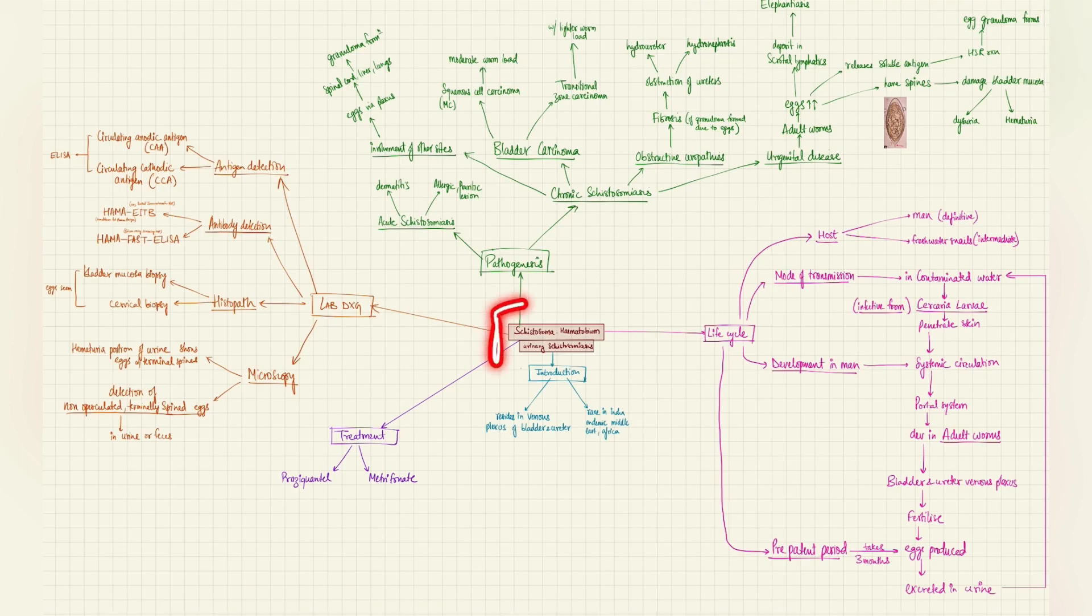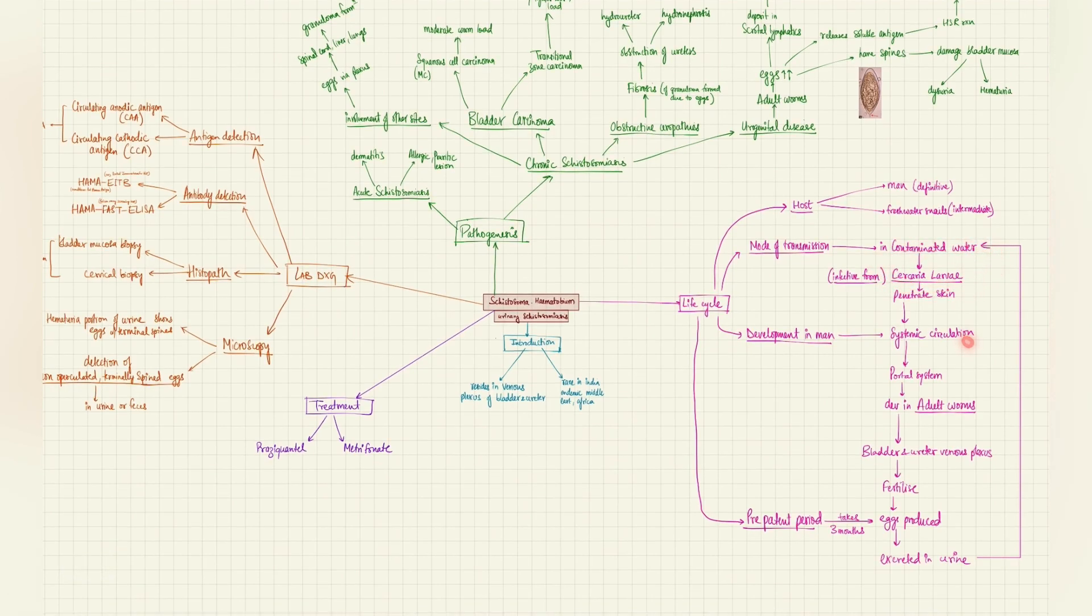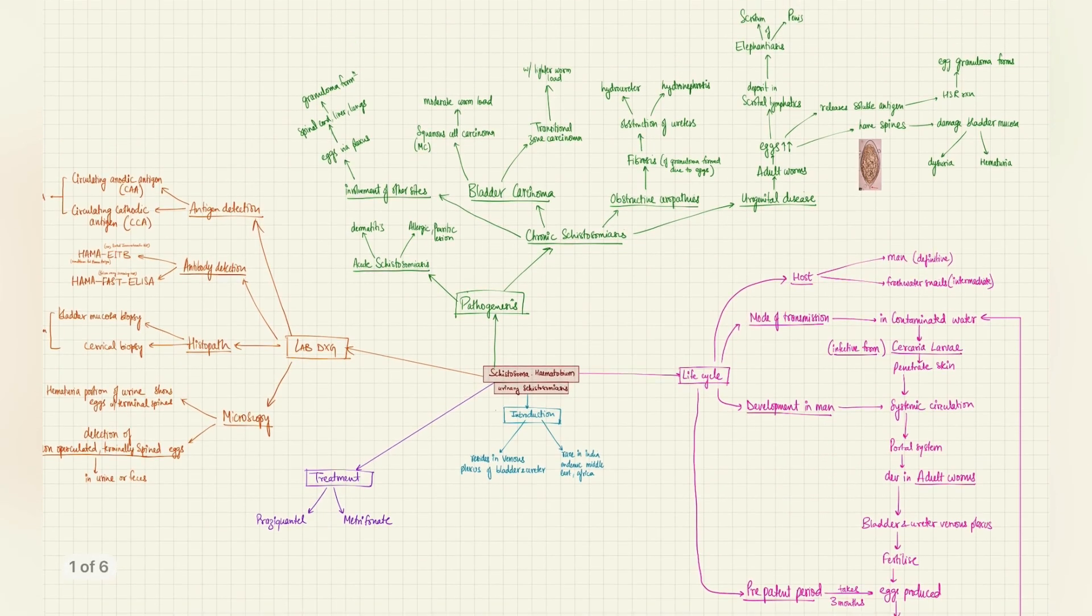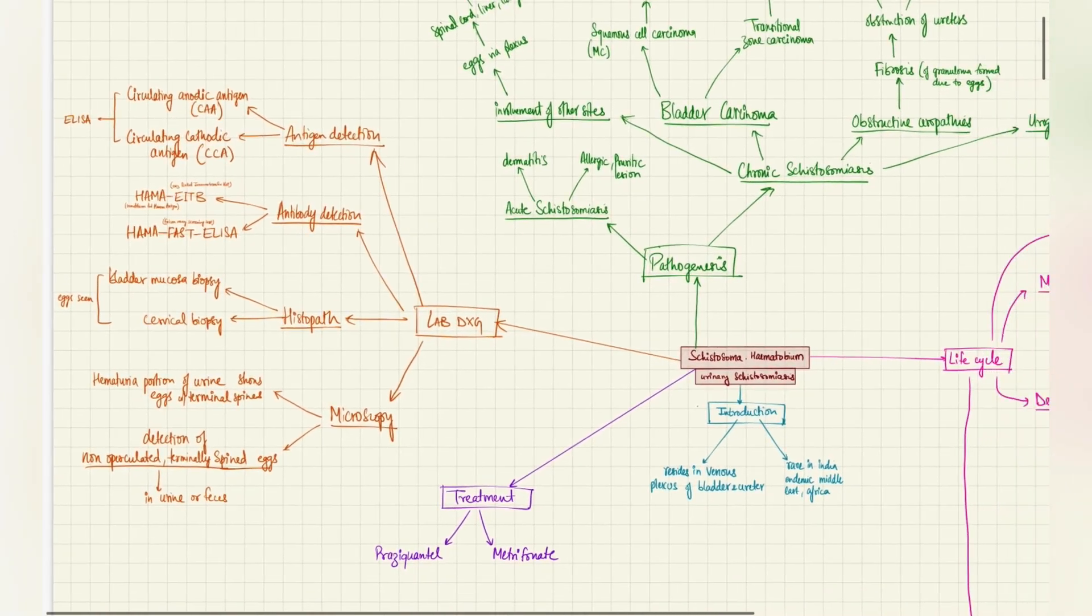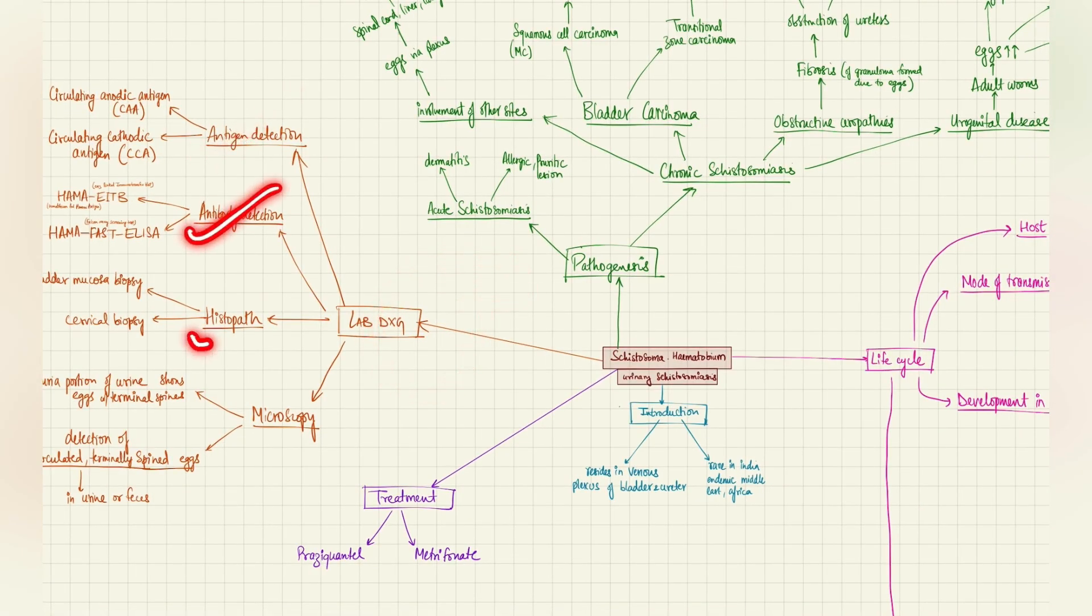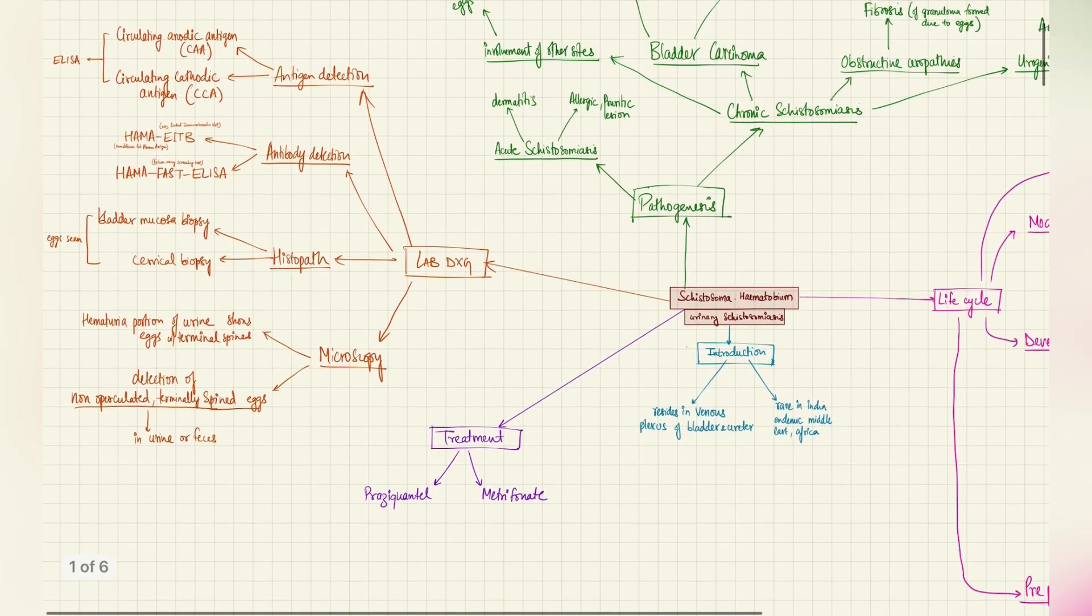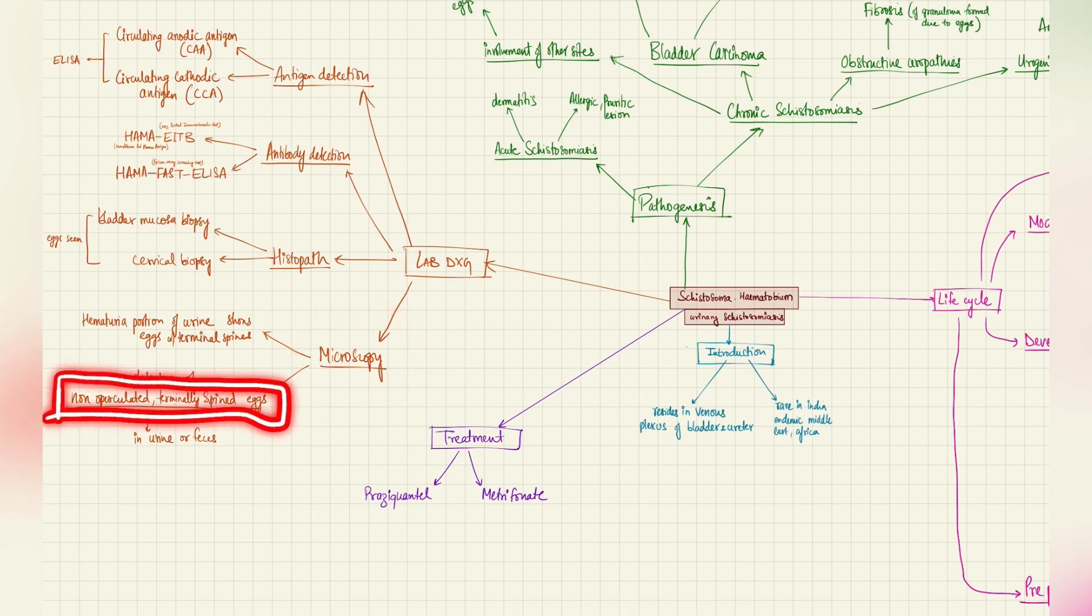Let's sum it up. Schistosoma haematobium is a blood fluke and it mainly involves the venous plexus of bladder and ureter. In the life cycle, we can see the cercaria larva is what penetrates the skin through contaminated water. It goes to systemic circulation where it forms the adult worms. These adult worms reach the bladder and ureter plexus where they will fertilize and lay eggs. These eggs will be excreted in urine and then the life cycle continues. The pathogenesis: we have seen dysuria, hematuria, granuloma formation, elephantiasis, hydronephrosis, hydroureter, squamous cell carcinoma, and granuloma formation in other extraurinary sites. We know the reasons for these, which will be discussed in the lab diagnosis that we have antigen detection, antibody detection, histopathology, microscopy. Antigen detection CAA-CCA, antibody HAMA-EITB, HAMA-FAST ELISA, histopath bladder mucosa cervical biopsy, and microscopy we will detect non-operculated terminally spined eggs.